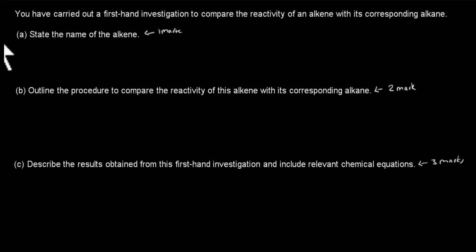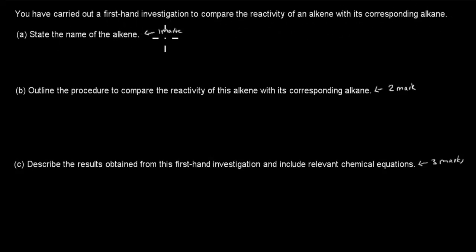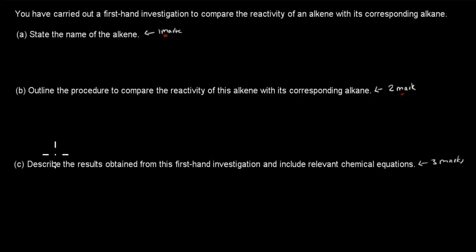The question says: you have carried out a first-hand investigation to compare the reactivity of an alkene with its corresponding alkane. Part A: state the name of the alkene — that's worth one mark. Part B: outline a procedure to compare the reactivity of this alkene with its corresponding alkane — that's worth two marks. Part C: describe the results obtained from the first investigation and include relevant chemical equations — that's worth three marks.